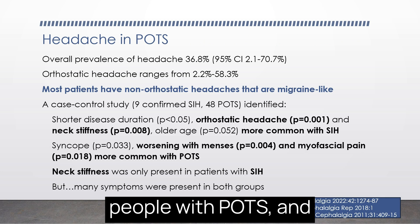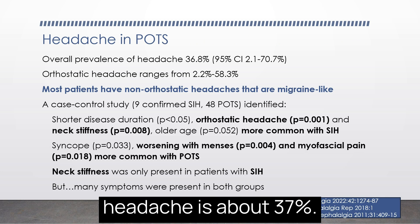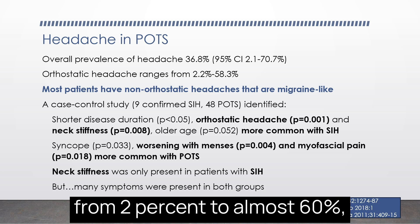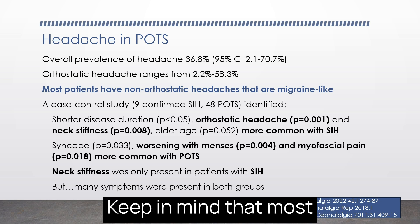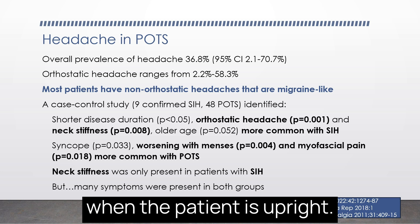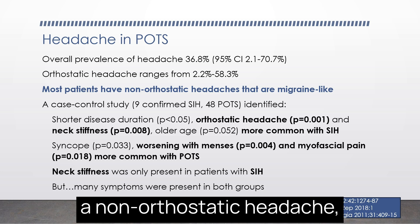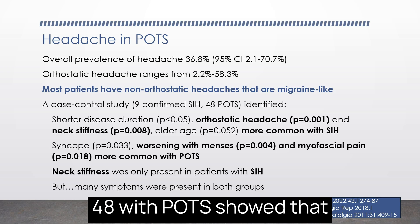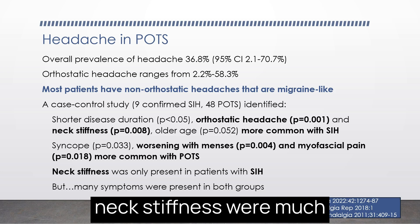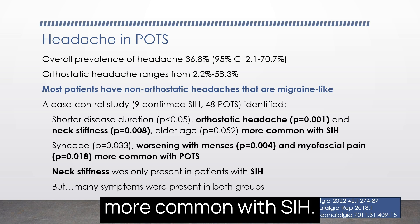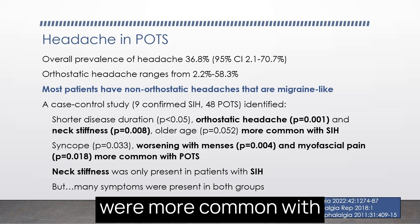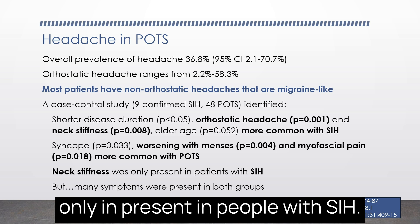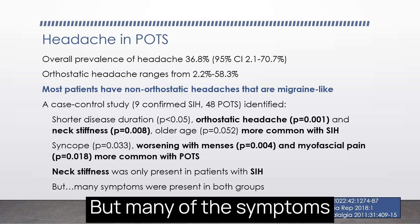Headache is common in people with POTS, with an overall prevalence of about 37%. Orthostatic headache is reported to range from 2% to almost 60%, which is a pretty wide range. Most symptoms of POTS get worse when the patient is upright, but most people with POTS have a non-orthostatic headache that sounds like migraine. A case-control study of 9 patients with SIH and 48 with POTS showed that orthostatic headache and neck stiffness were much more common with SIH, while worsening with menses, myofascial pain, and syncope were more common with POTS.